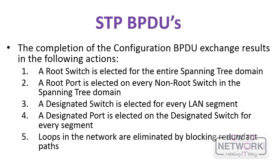At the completion of configuration BPDU exchange, the following results occur: a root switch is elected for the entire spanning tree domain, and a root port is elected on every non-root switch — the forwarding port closest to the root bridge in terms of path cost. A designated switch and designated port are elected for every LAN segment, where the designated port is the chosen forwarding port for that segment. Based on all of these calculations, loops are avoided in the network.